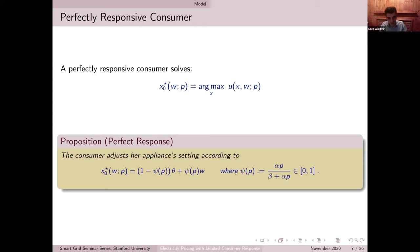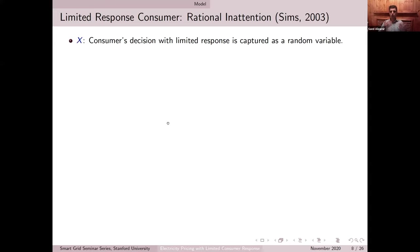As W changes from this hour to the next, I readjust my X star again and get a new optimal temperature. This is what happens in an ideal world where customers are perfectly responsive and there is no limited cognitive ability or behavioral barrier. But in reality, that's not the case. Now let's go to a more realistic setting — that's exactly the purpose of this talk: how consumers in reality make decisions.